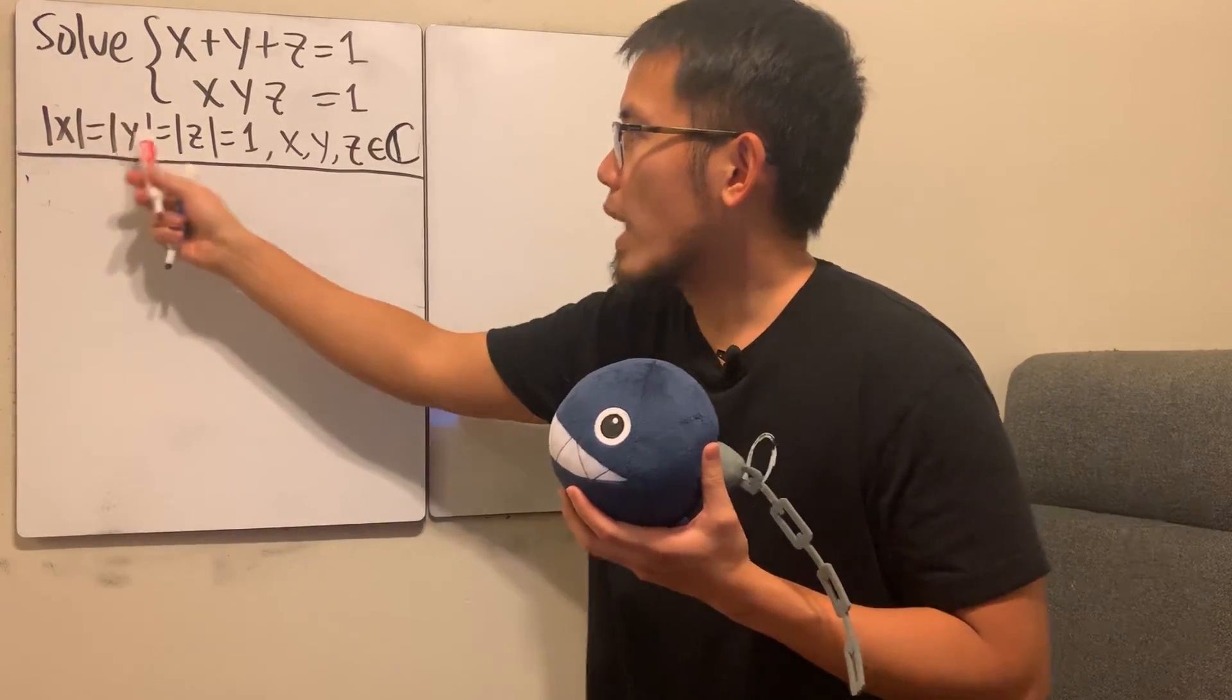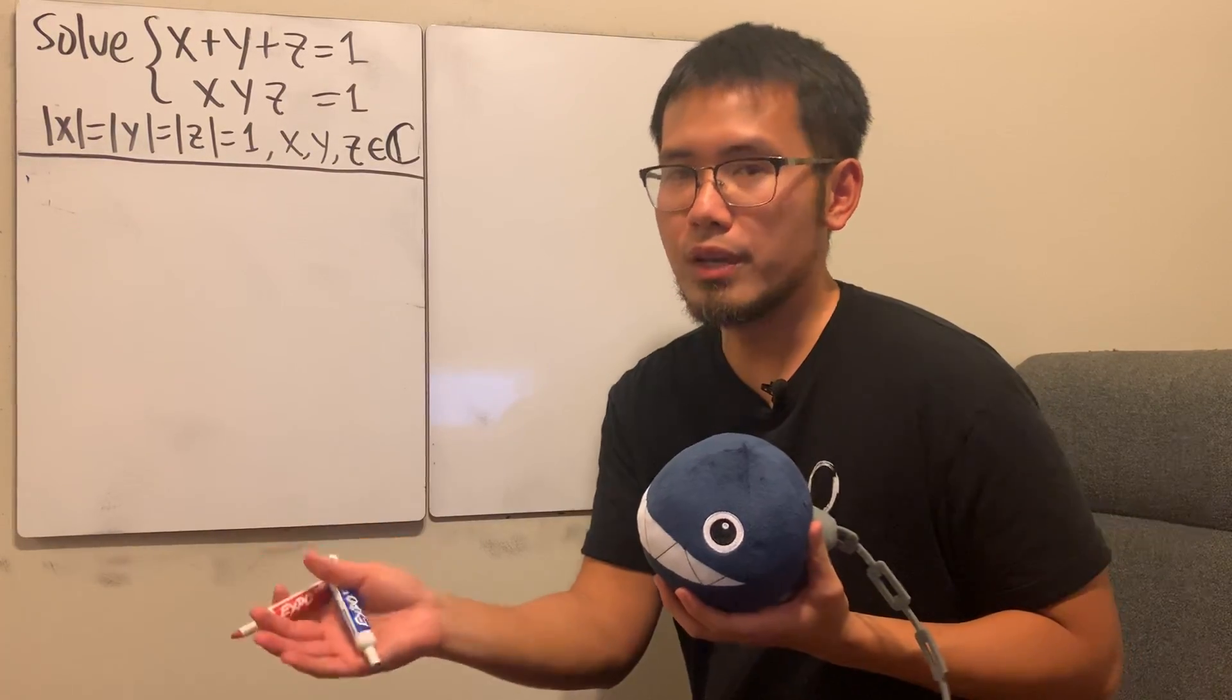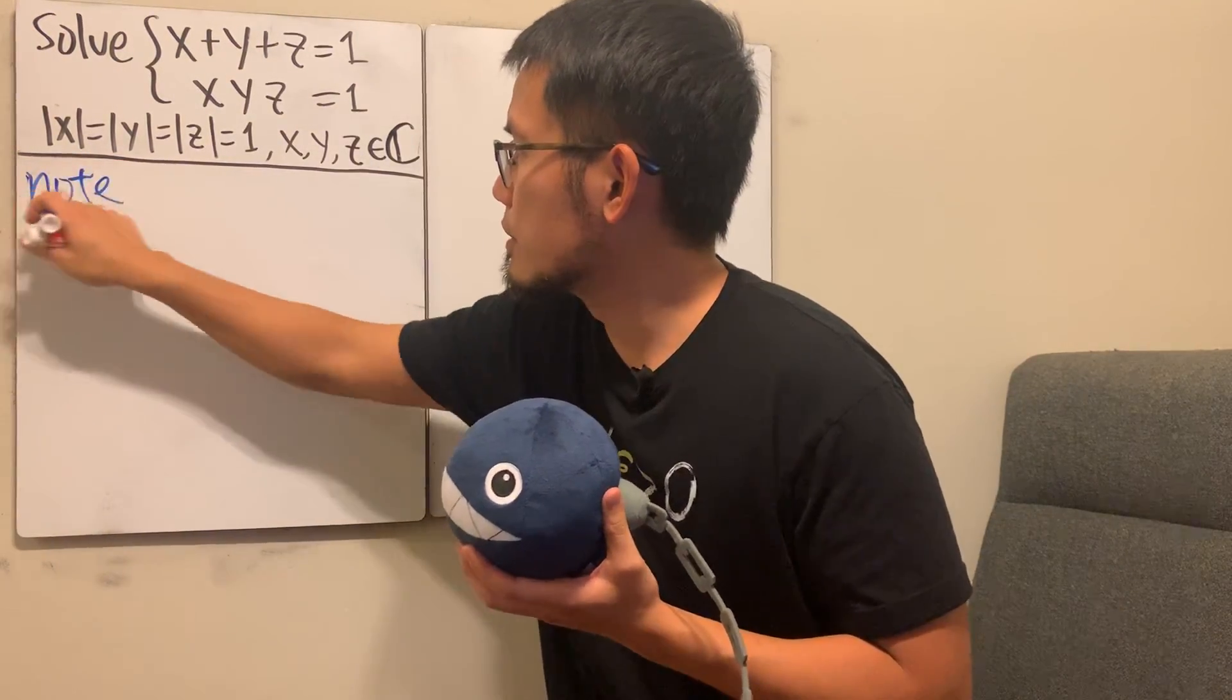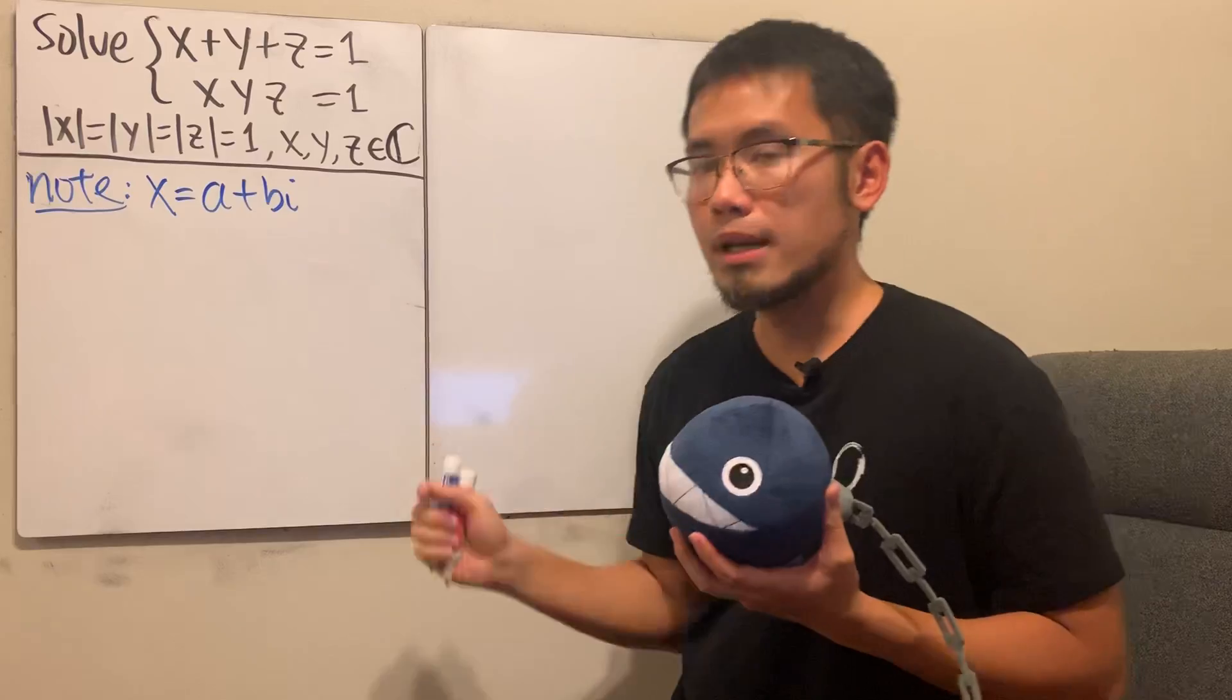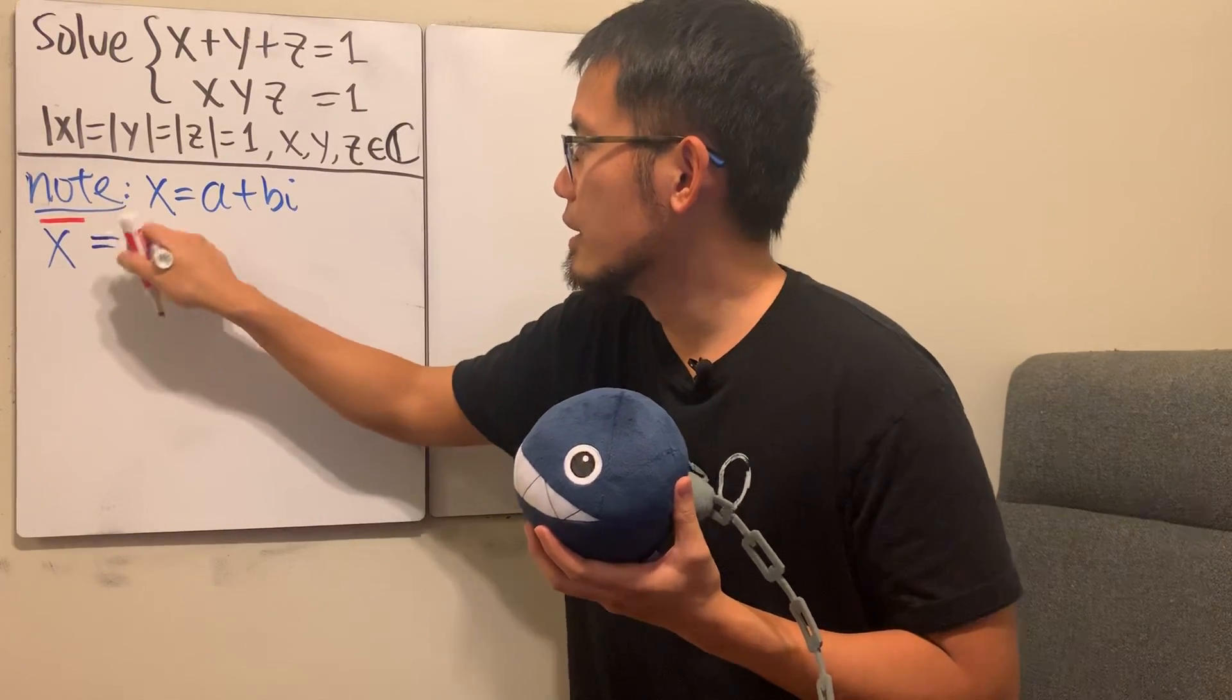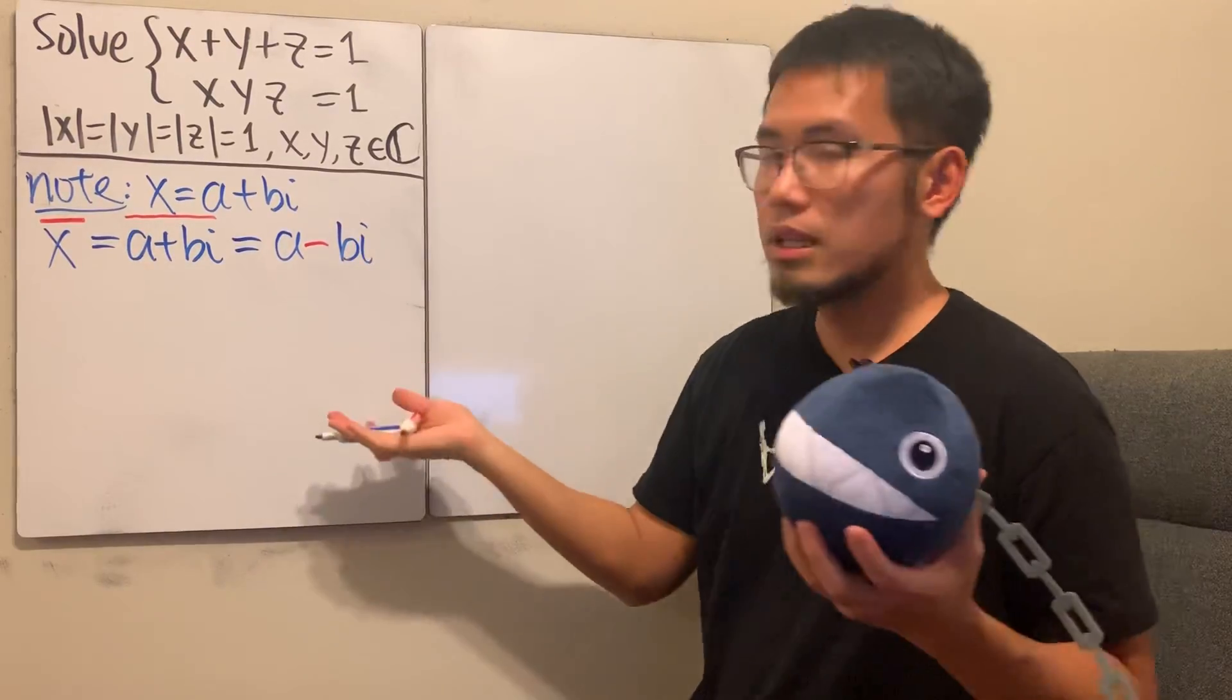First thing first, x, y, z, they are complex numbers. And because of this, we know that they are on the unit circle. And one of the things in the complex world is that when you have a complex number, you can talk about its complex conjugate. Especially with this information, its complex conjugate is actually pretty nice. So let me just write down some notes for you guys. So first of all, if I write x, again, it's a complex number, so I'll just write it in the standard form, namely a plus bi. a and b are real numbers, right?